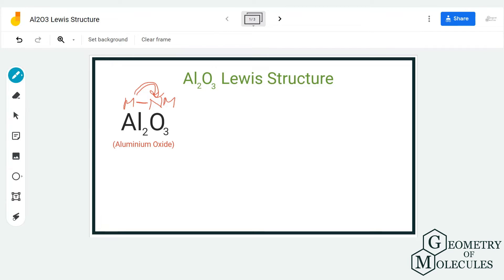So the Lewis structure would be a bit different from what you have seen previously. To start with, I am going to place two Al atoms over here. Now, Al is the chemical symbol for aluminum, and as we have two atoms, I am going to place two aluminum over here and three oxygen atoms over here.